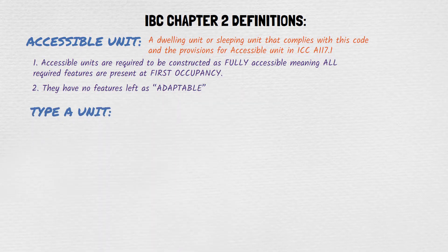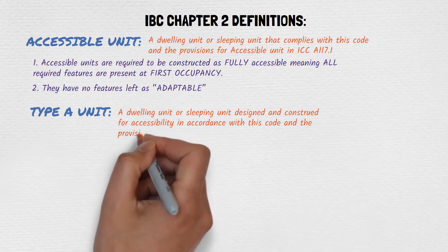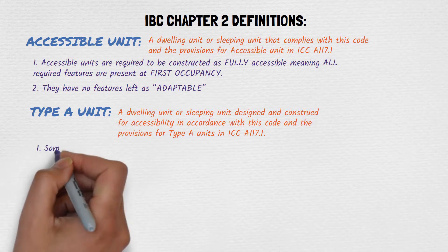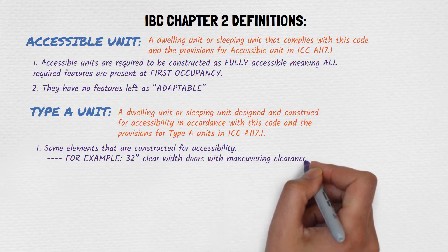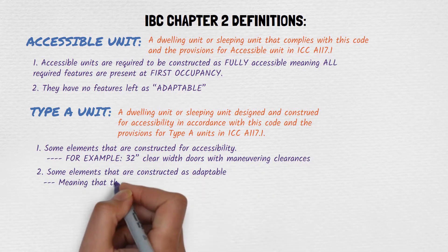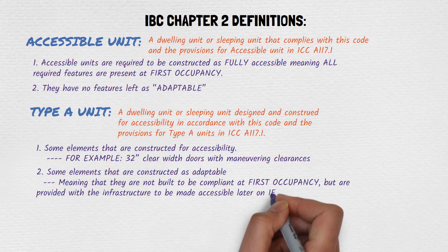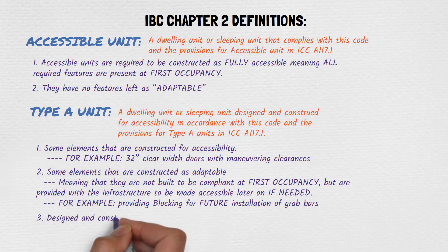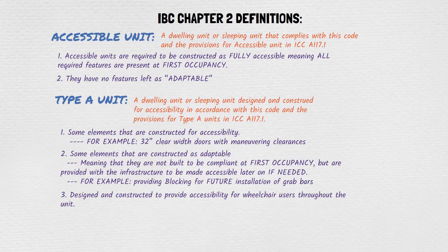A Type A unit is a dwelling unit or sleeping unit designed and constructed for accessibility in accordance with this code and the provisions for Type A units in ICC A117.1. Some elements are constructed for accessibility — for example, 32-inch clear-width doors with maneuvering clearances. Some elements are constructed as adaptable, meaning they are not built to be compliant at first occupancy but are provided with the infrastructure to make them accessible later, such as blocking for future grab bar installation. Type A units are designed to provide accessibility for wheelchair users throughout the unit. A Type A unit is more accessible than a Type B, but less accessible than an accessible unit.